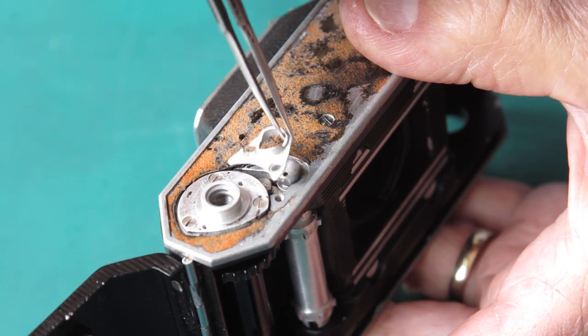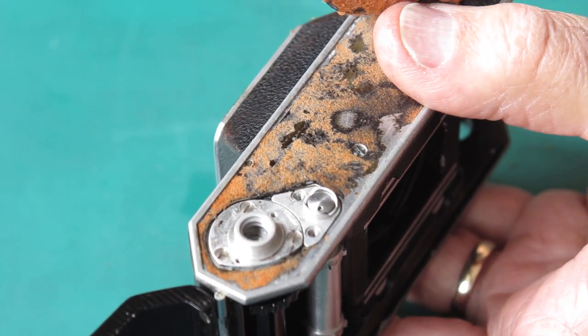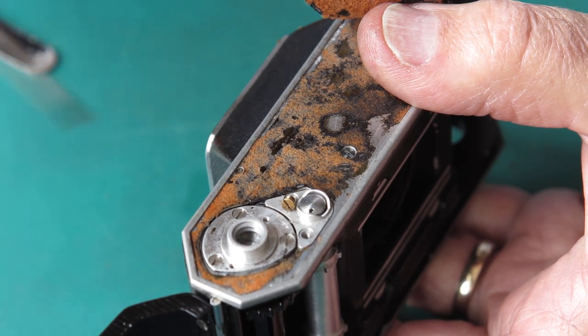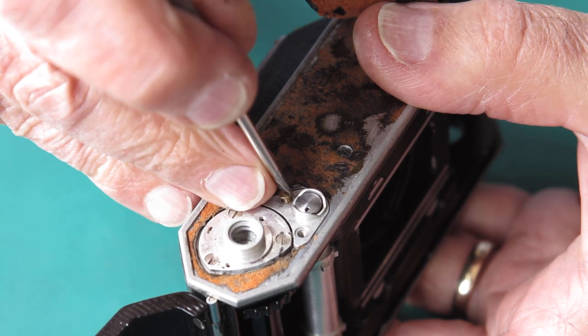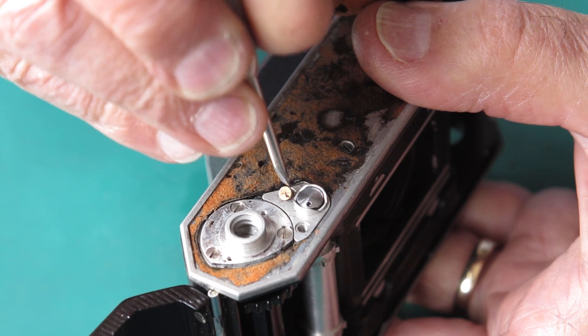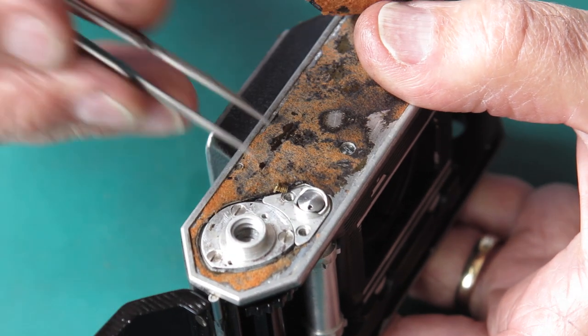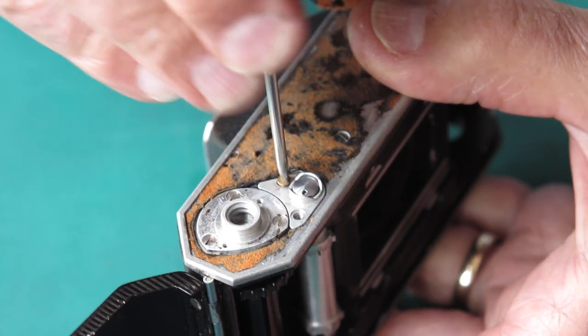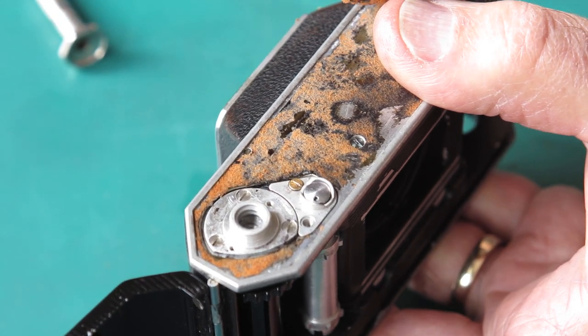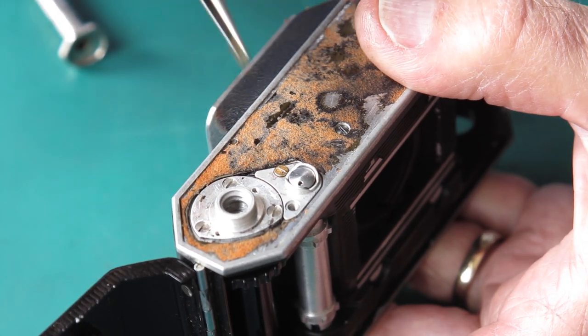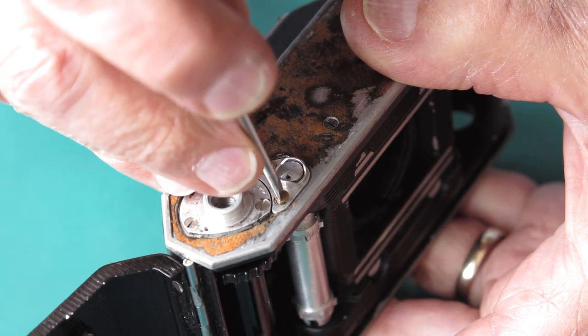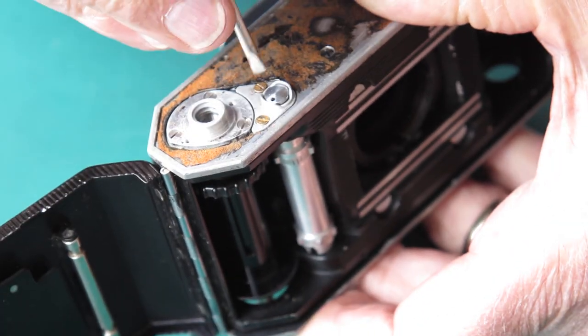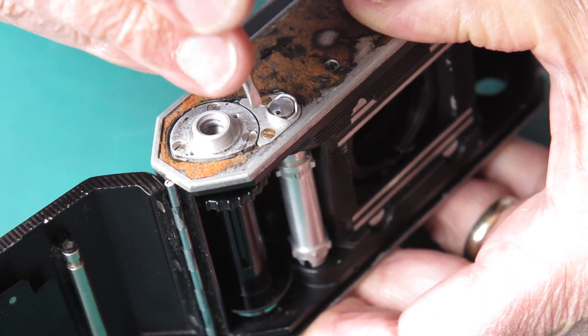Now the little cover here that goes over the rewind button has a couple of ears on it to stop you accidentally bumping the rewind button. The earliest examples of the Retina 2A didn't have those ears. It was exceptionally easy to bump that rewind button simply by putting the camera down on the table. Let's get these screws in place. Tighten them up.